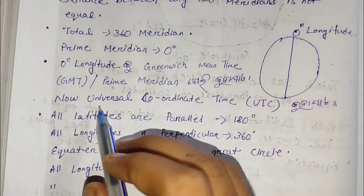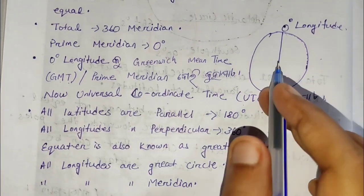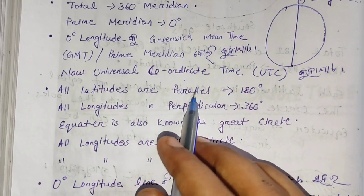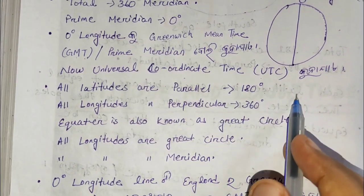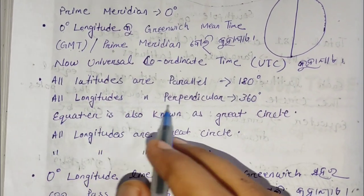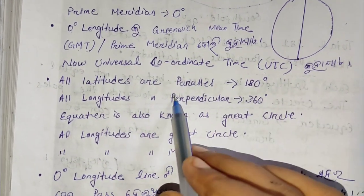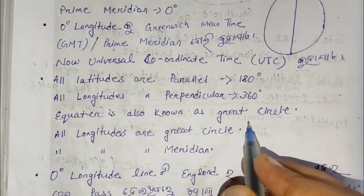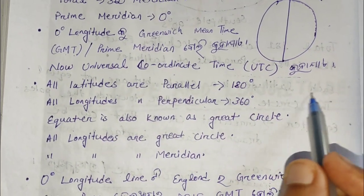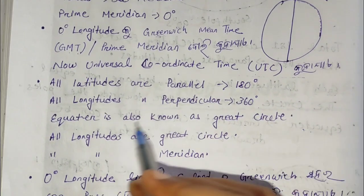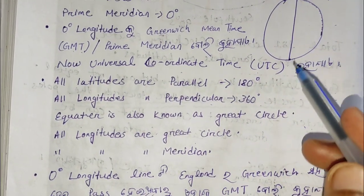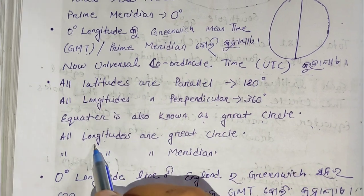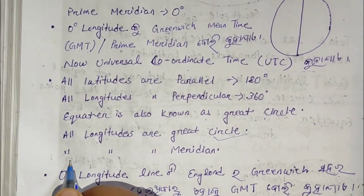We have to use Universal Coordinate Time — UTC — because this is very important. We use primary data. Then, latitude is parallel and the total is 180, and the equator is 1. The longitude is perpendicular; latitude is parallel. The longitude is 360. The equator is also known as a great circle. All longitudes are great circles. The equator is a great circle but latitude lines other than the equator are not. All longitudes are meridians.